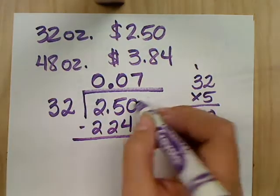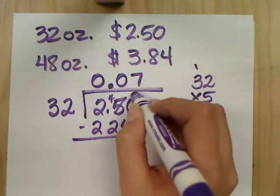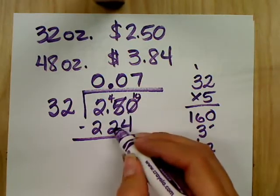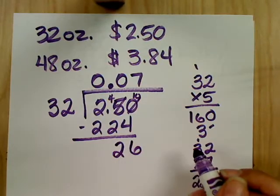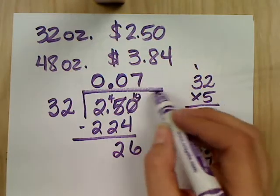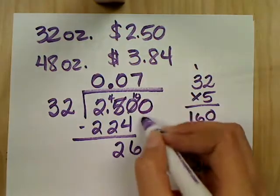Subtract. Borrow from the 5, that becomes a 4. This becomes 10. 10 minus 4? 6. 4 minus 2? 2. Okay. Now, I'm not quite finished because depending on what this next number is, it could change it to 8 cents rather than just the 7 cents. So add a 0.